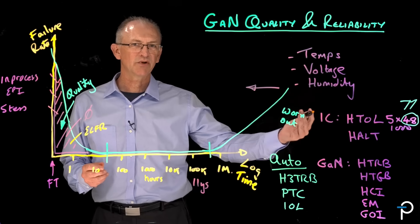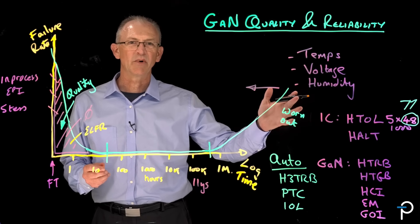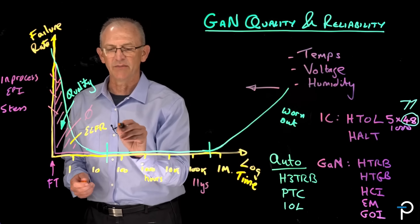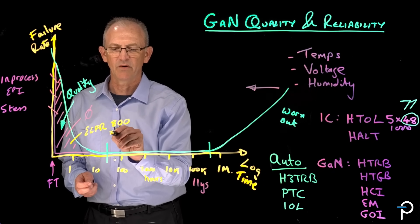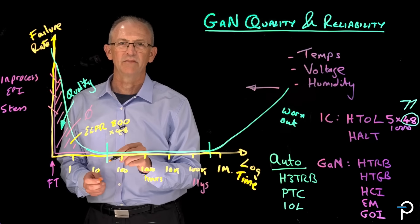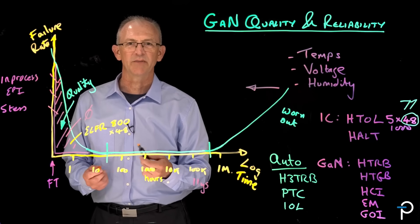But instead of doing a small number of parts for a long time, we do a large number of parts for a relatively short time. And in this case, it's 800 parts for 48 hours. Multiple lots, obviously, to ensure that we don't have any process lot dependencies.